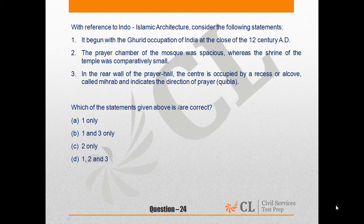Statement 3: Prarthna sabhaagar ki pichli deewar par, madhya mein ek aala jaisi sanrachna hoti thi. A is equal to 1, B is equal to 1 and 3, C is equal to 2, D is equal to 2 and 3. The answer is D.